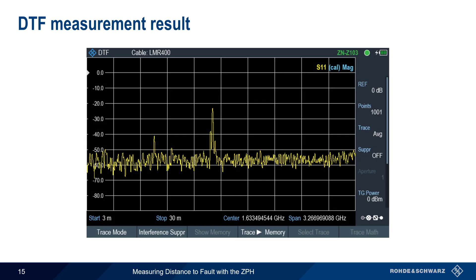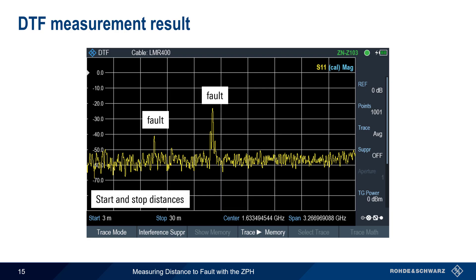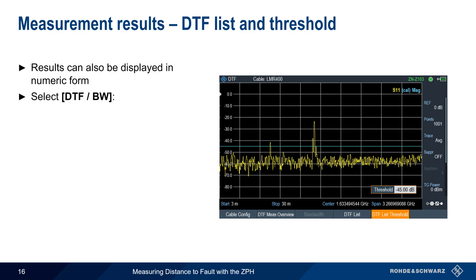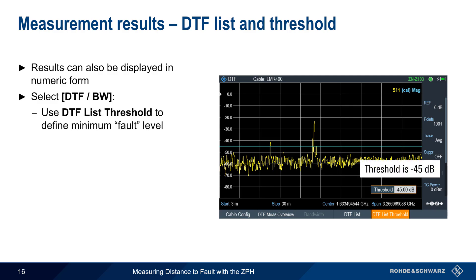After disconnecting the calibration standards or unit and attaching the cable under test, the distance to fault measurement will run automatically. Here we see a typical measurement result, showing two potential faults in the cable. The start and stop distances are shown along the bottom of the screen, as are the center frequency and span.